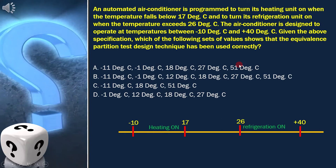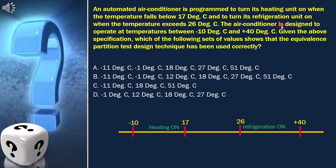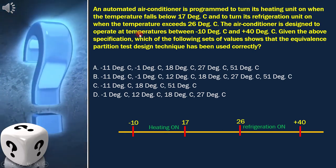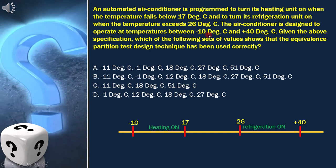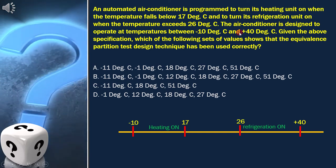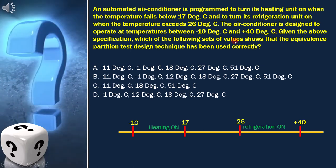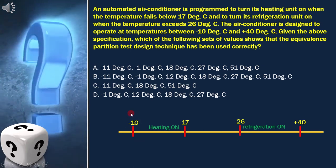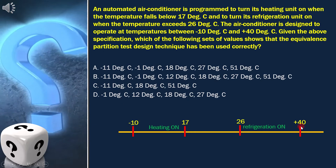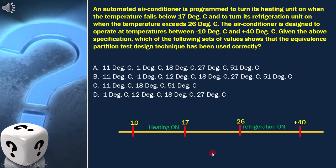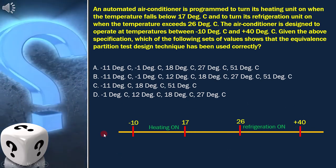And again, as per the question, the air conditioner is designed to operate at temperatures between minus 10 degrees Celsius and plus 40 degrees Celsius. That means negative 10 and 40 are two more boundaries. With this, the equivalence classes diagram is ready.